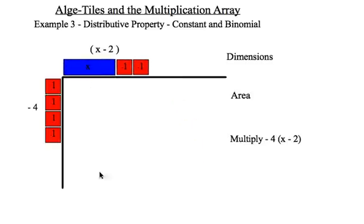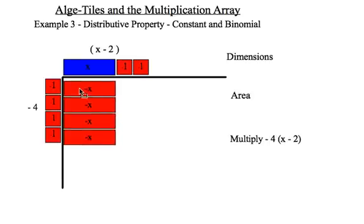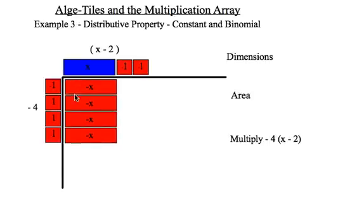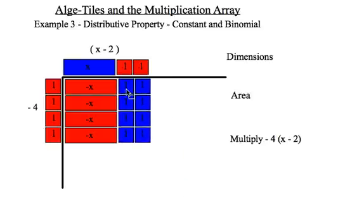Now, negative 1 times x is negative x. And I need to repeat that four times to fill that column in. Now, again, I need to be careful here because I have negative 1 times negative 1, which is positive 1. So, when I fill all of those in, that's what I get.